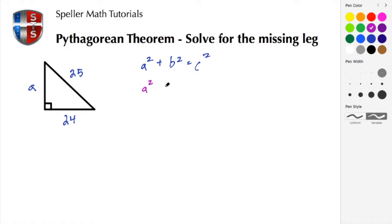In this case, b squared is 24, so 24 squared is equal to c squared, which would be 25 squared. Here we need to subtract the 24 squared from both sides, and doing so it's eliminated on the left hand side.